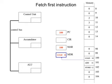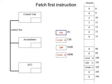Next, that instruction needs to be placed inside the current instruction register. Once it's been fetched into the current instruction register, the program counter will increment by one. So the program counter is always pointing to the memory address of the next instruction to be fetched, before we've even executed this one.